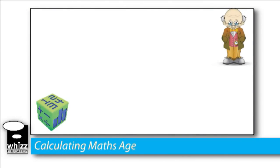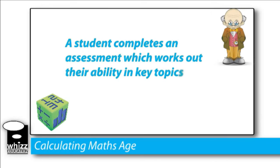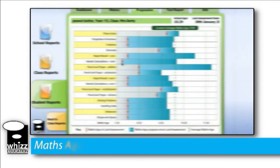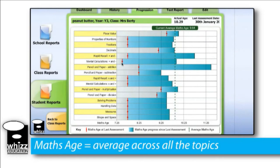So how do we calculate maths age? When a student first logs into MathsWiz, he or she is presented with a series of questions in an initial assessment. The assessment works out their ability across several key topics, and in that way MathsWiz gets an overall understanding of the child's ability and their strengths and weaknesses. By taking the average across all the topics, you get a student's overall maths age, as we can see here.